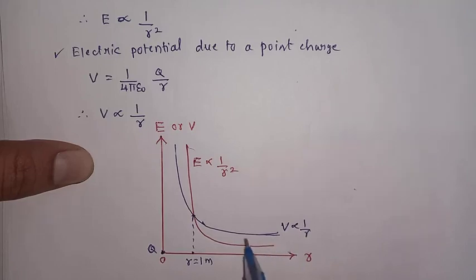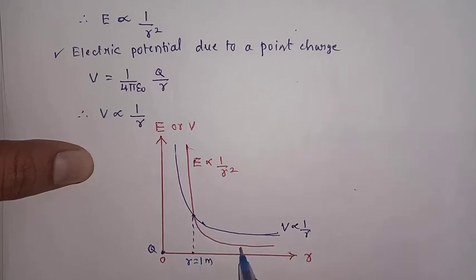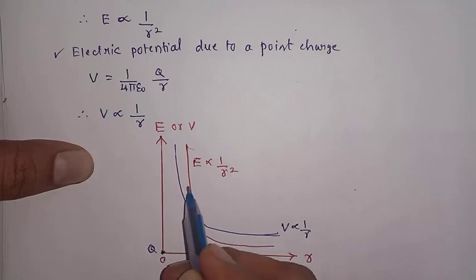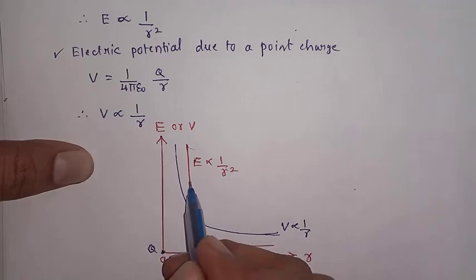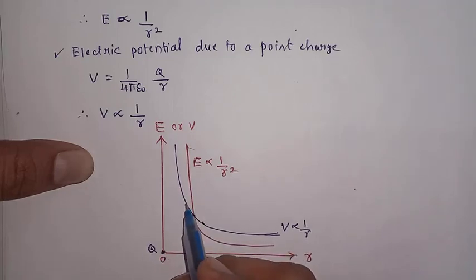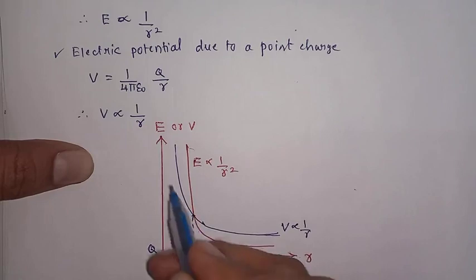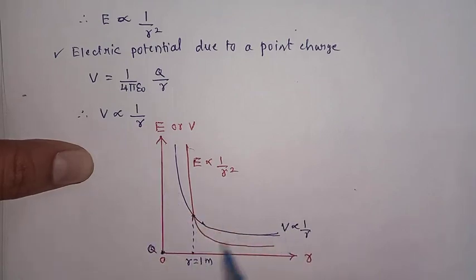If the distance is greater than one meter, the electric potential has a greater value than the electric field. So the electric field has less value compared to the electric potential when the distance is more than one meter, and more value when the distance is less than one meter. The graph reflects this behaviour.